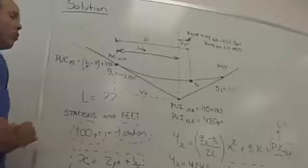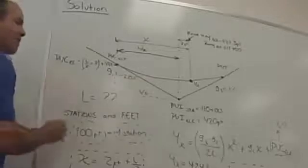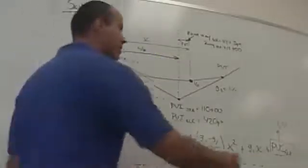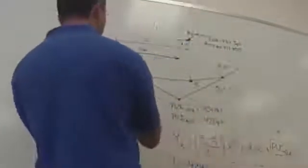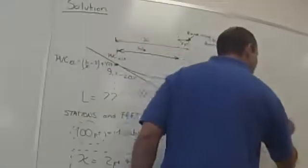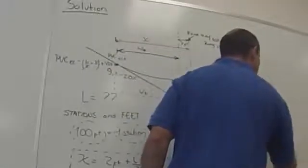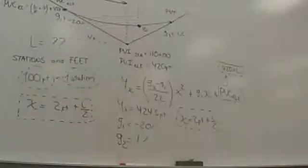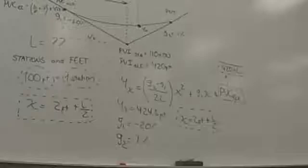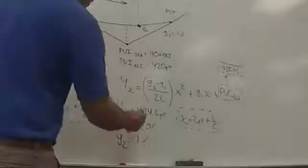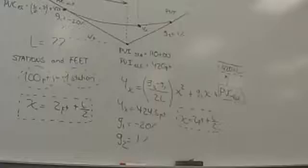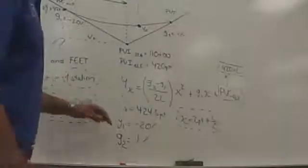Plus 420. This one and this one will cancel. So the PVC elevation in terms of L, PVC elevation in terms of L will be equal to 420 plus L. And now we're solving the station and we're going to be solving the stations and everything.